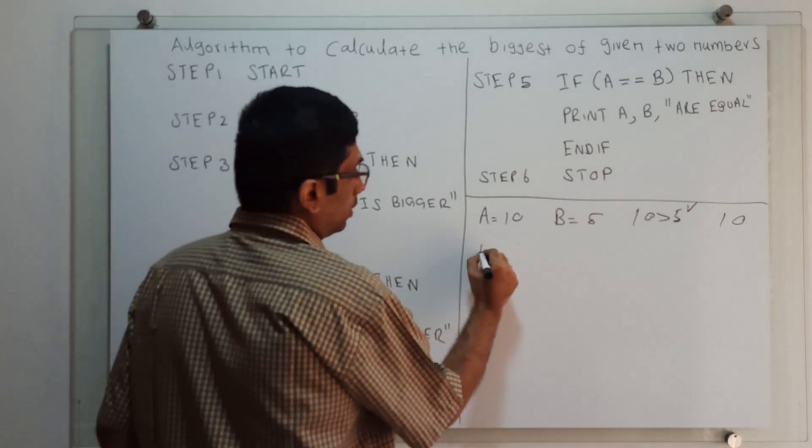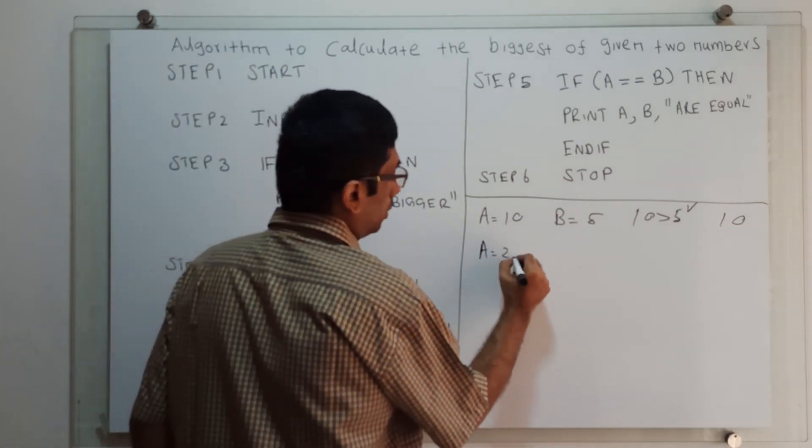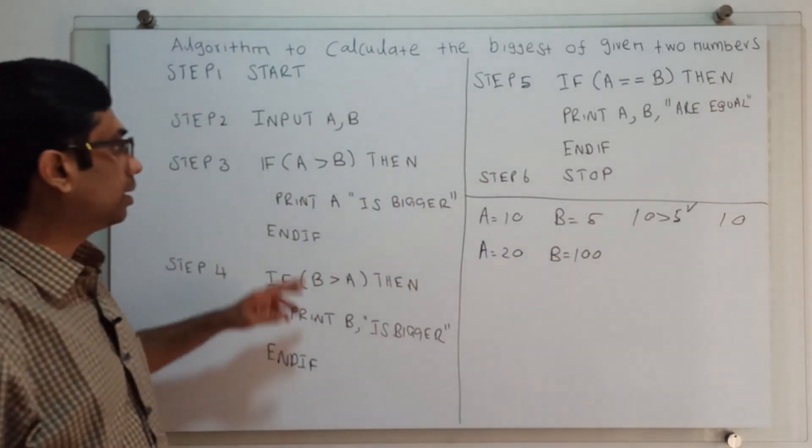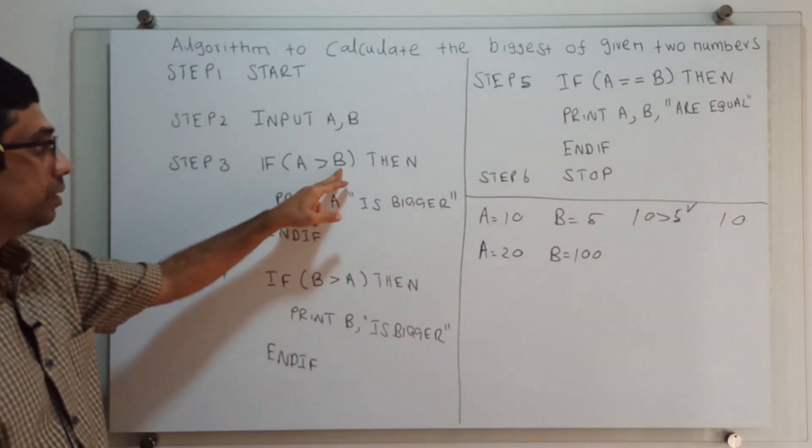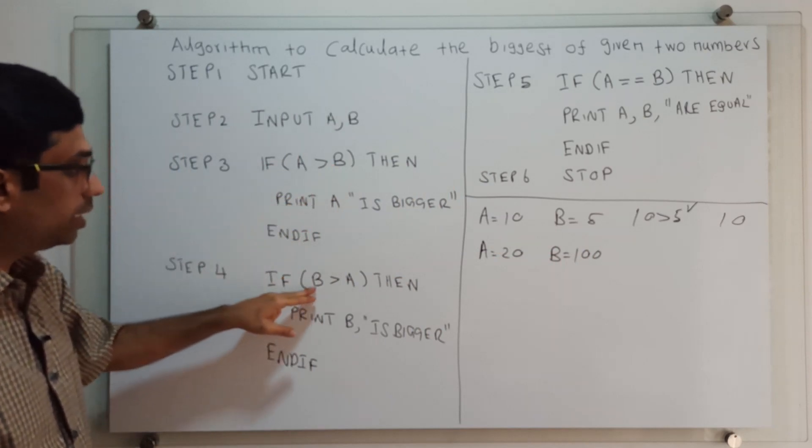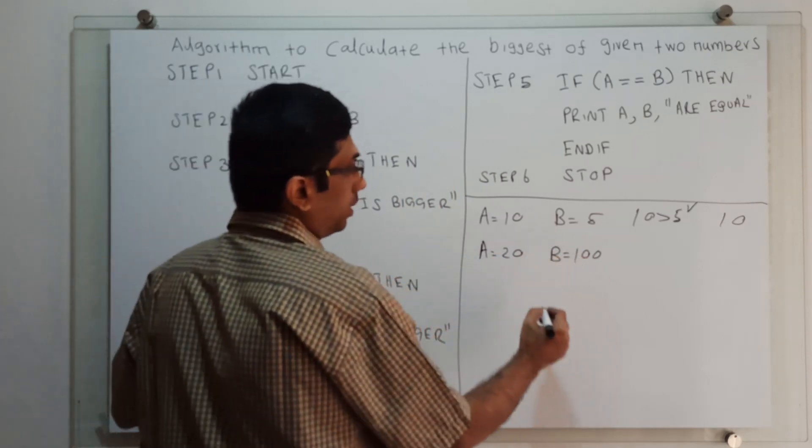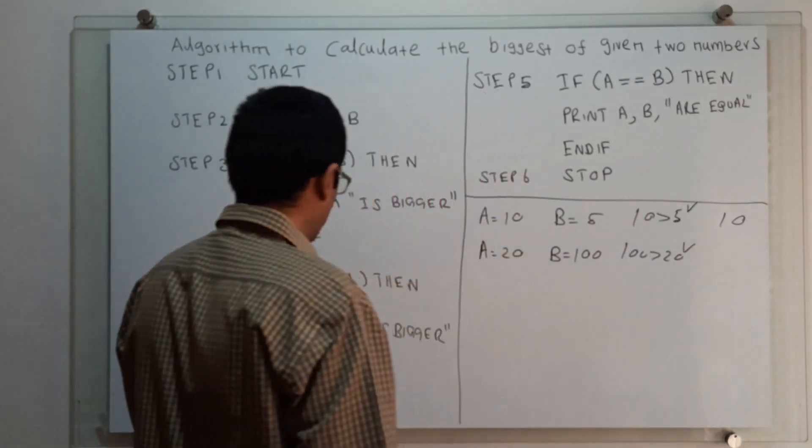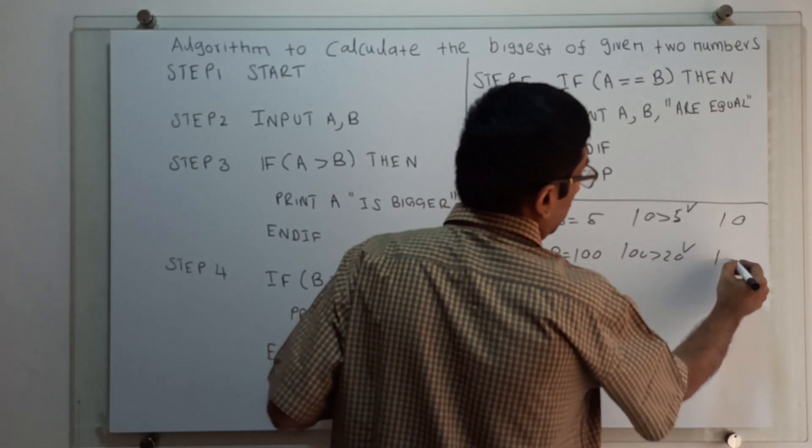For example, I am giving A equal to 20, B equal to 100. The algorithm will check A greater than B. This is false. We come to the next statement in step 4. B greater than A, 100 greater than 20 is true. It will print 'B is bigger,' 100 is bigger.